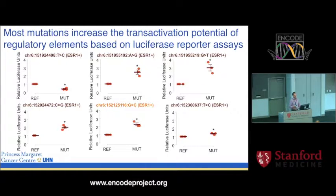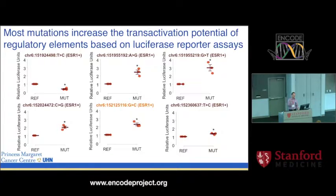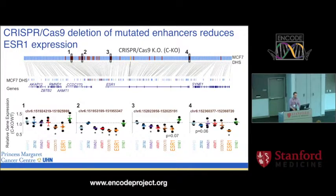To assess whether these mutations change the transactivation potential of the enhancers, we used a luciferase reporter assay, comparing a reporter plasmid with the wild-type sequence at the enhancer location versus one with a mutant version of that regulatory element. Of the six mutations showcased, all except one led to an increase in luciferase activity — so most of these mutations are acting as gain-of-function mutations, consistent with ER being highly expressed in ER-positive tumors.